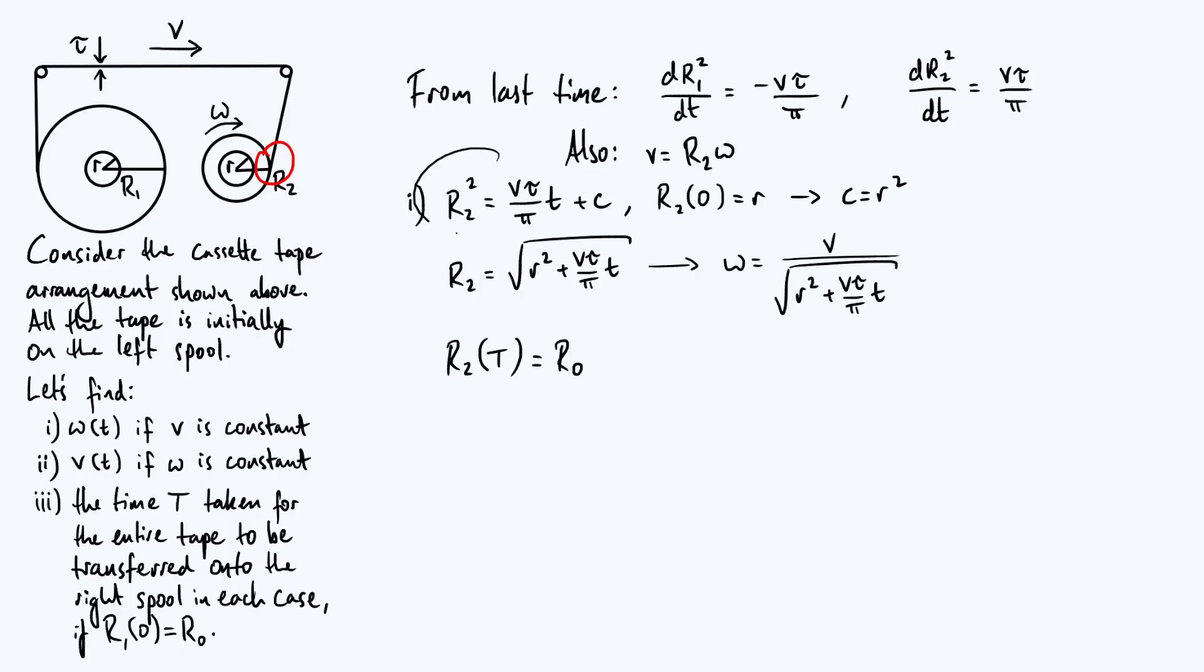And then you can plug that back into our equation for R2 squared and solve for capital T. So we're going to get R0 squared equals small r squared plus v tau over pi times capital T. And if you just rearrange that, you find T equals pi times R0 squared minus r squared over v tau.